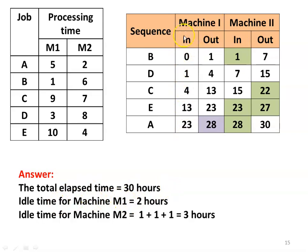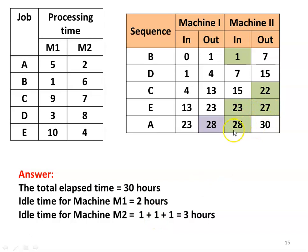Idle time for machine 1: runs continuously from hour 0 to hour 28, then waits 2 hours — idle time is 2 hours. Idle time for machine 2: waits 1 hour initially (0 to 1), then runs to hour 22, waits 1 hour (22 to 23), runs to hour 27, waits 1 hour (27 to 28) — total idle time for machine 2 is 3 hours. This is the complete solution to Example 2.